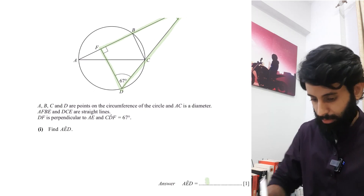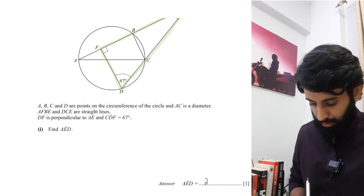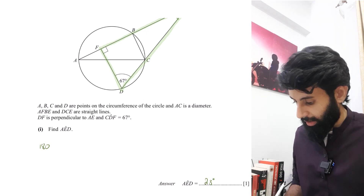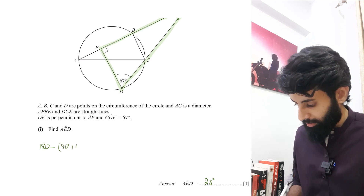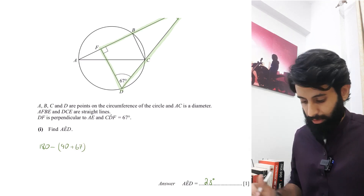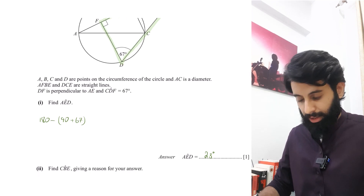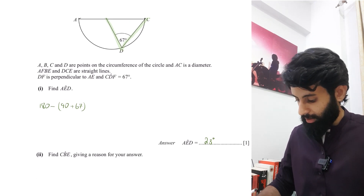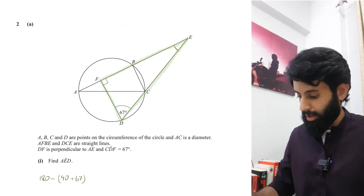So angle AED equals 180 minus the sum of 90 and 67, which is equal to 23 degrees. Next, we have: find CBE, giving a reason for your answer.